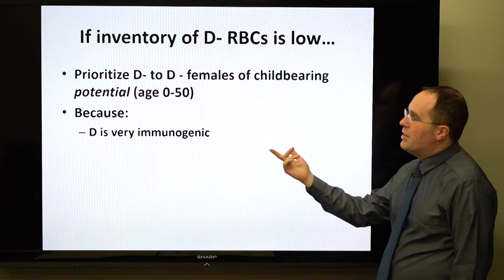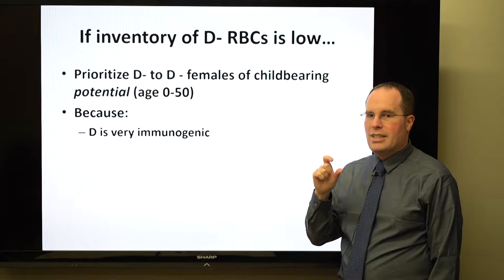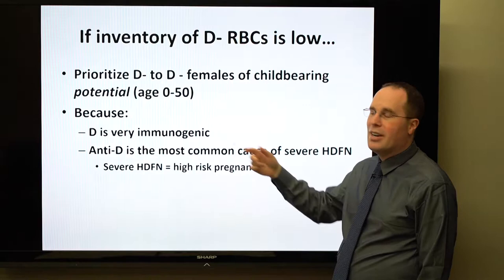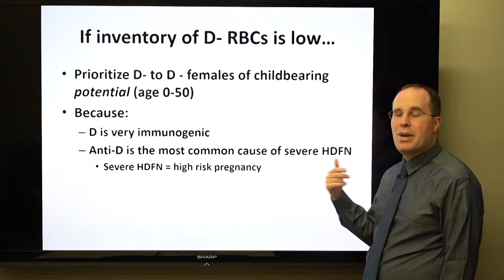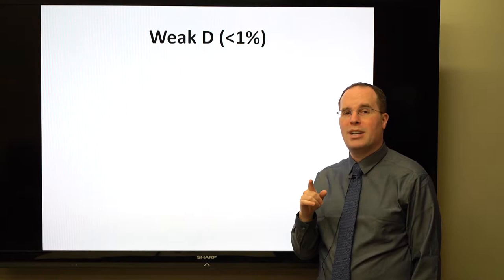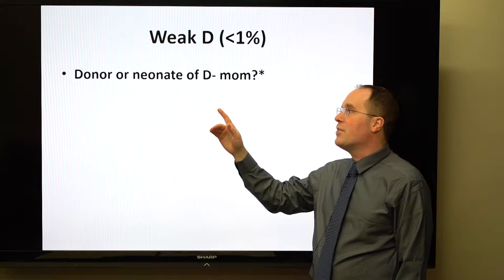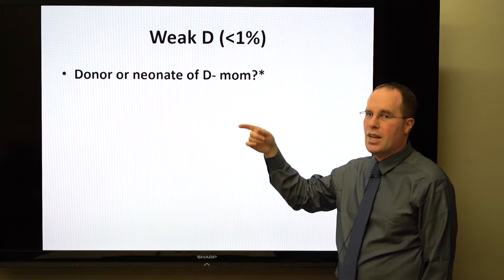D is very immunogenic — that's why we include D antigen status alongside ABO typing. Anti-D is the most common cause of severe hemolytic disease of the fetus or newborn, meaning cases requiring intrauterine transfusion. About less than 1% of the population is weak D, and we only perform weak D testing for blood donors and for neonates born to D-negative mothers.